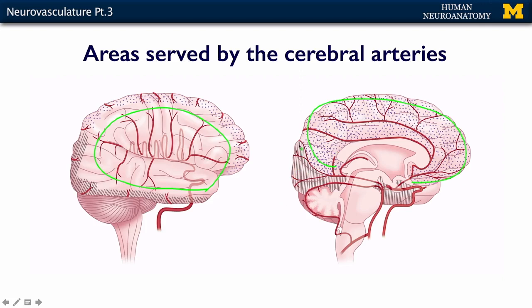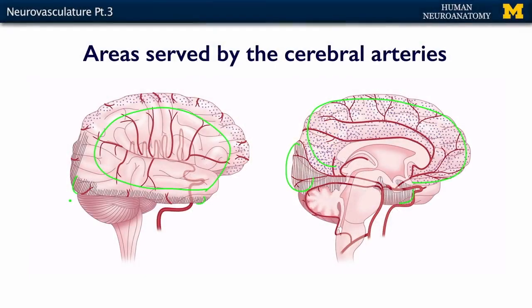The posterior cerebral artery serves the occipital lobe and part of the temporal lobe. Knowing where each artery is and what part of the brain it serves can guide you when trying to understand what's going on during a potential stroke situation. If their personality changes or they start to act very strangely, maybe it's the anterior artery affecting the decision-making areas. If they're suddenly numb or can't move, maybe it's the middle cerebral artery feeding the pre- and post-central gyrus. If there are deficits in the visual system, maybe it's the posterior cerebral artery.